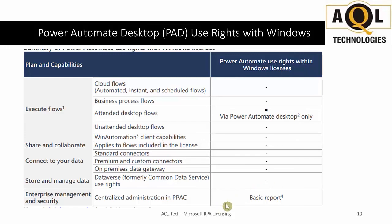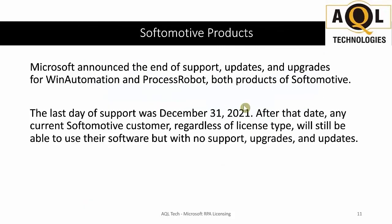You get some basic reporting and that's all. You can use the Power Automate Desktop tool without any Power Automate licensing, but don't expect workflows to auto-schedule and fire up on their own — you have to run them manually. Finally, Microsoft announced end of support on December 31, 2021 for WinAutomation and Process Robot, both products of Softomotive. You should consider moving over to Power Automate.